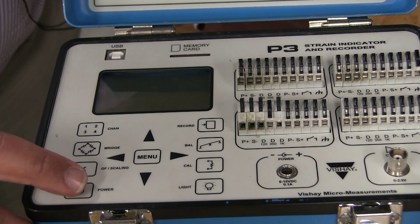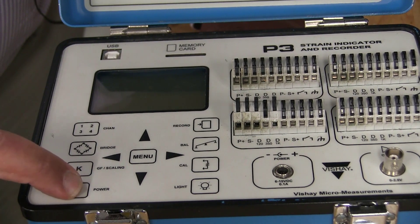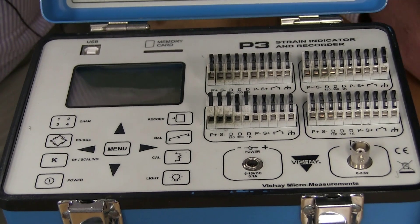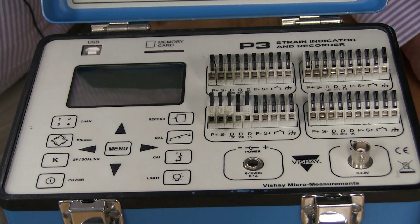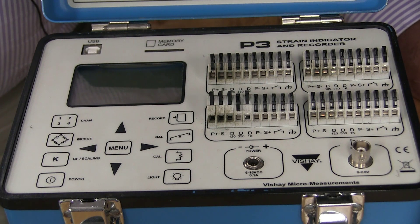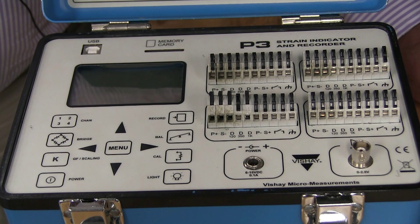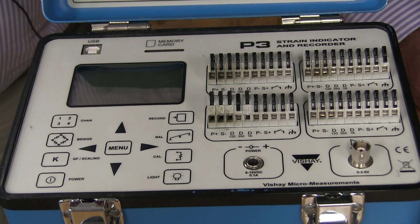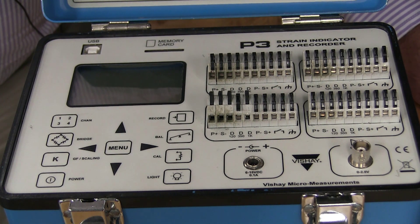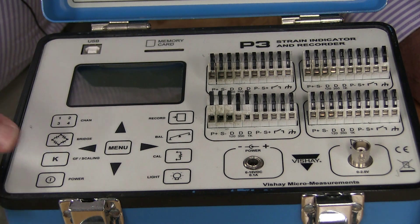I'm going to turn the power on to this blue strain gauge conditioner. This is a different strain gauge conditioner than the one that we used for the cantilever beam. The cantilever beam one, you saw a lot of dials and knobs, and it only had one channel, and it did not compensate for the kind of bridge that you had. This blue strain gauge conditioner is much more state-of-the-art. It's fully digital.